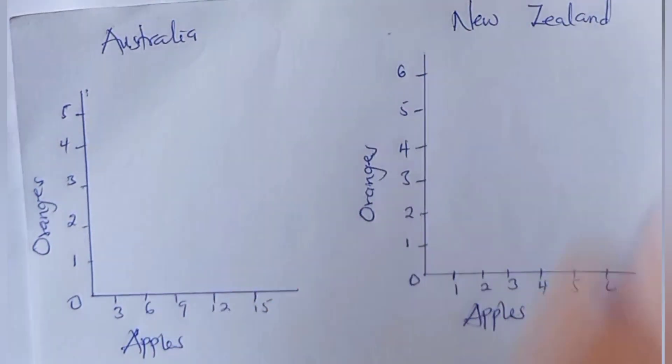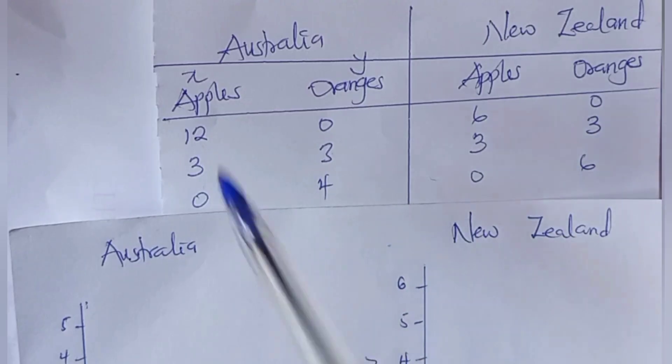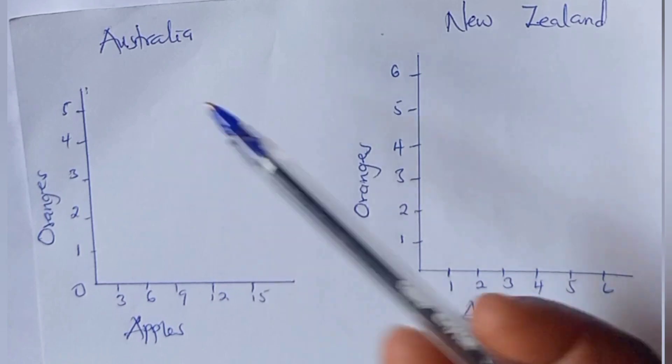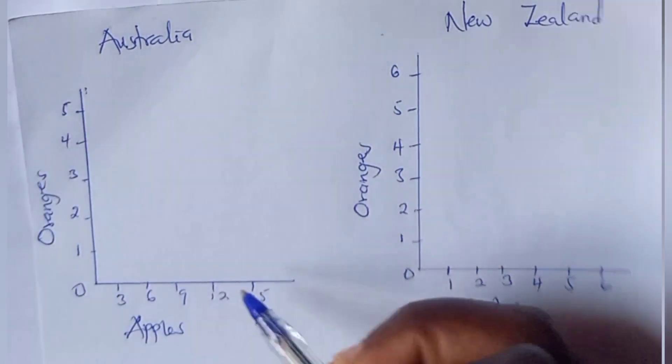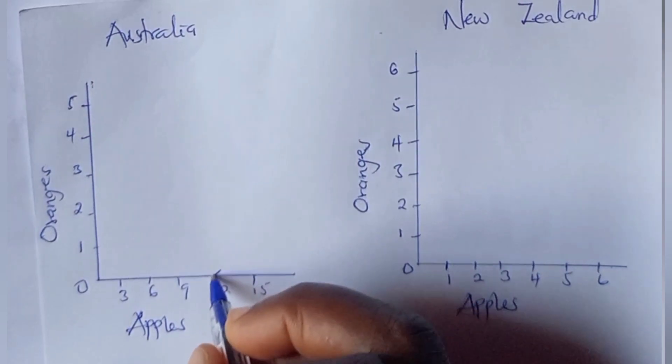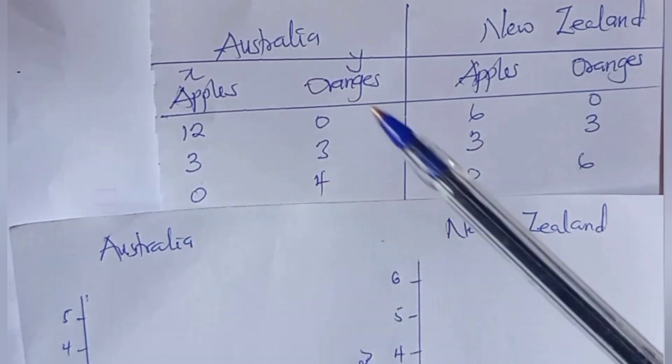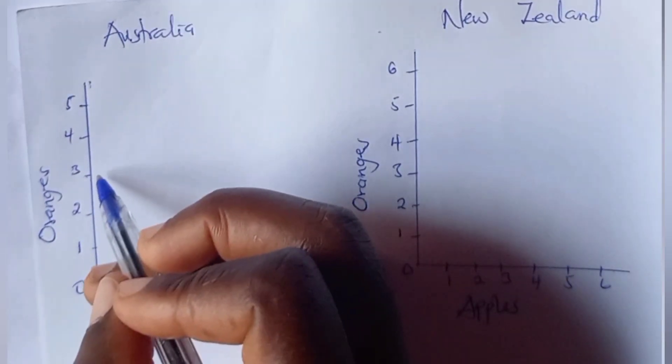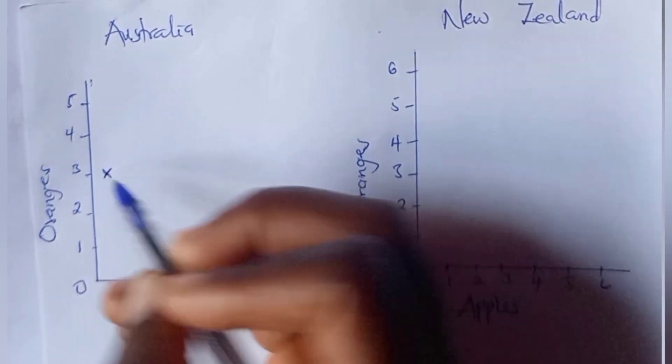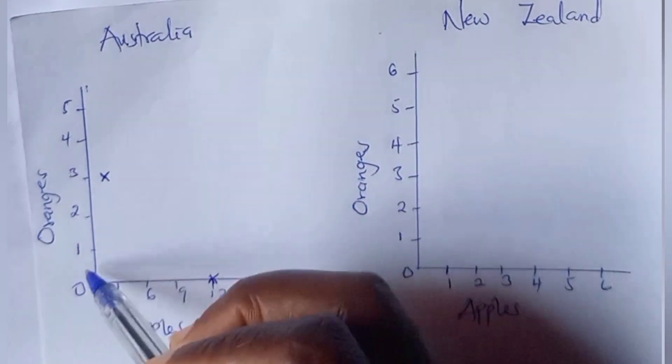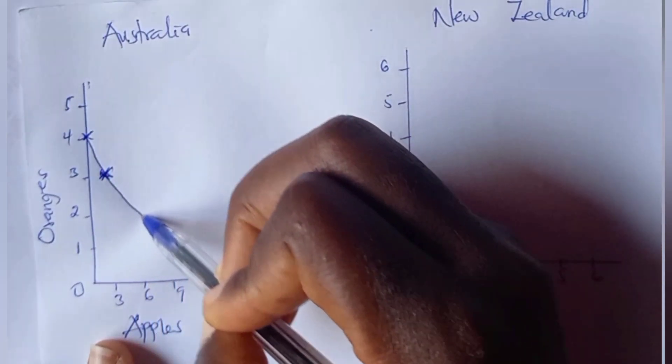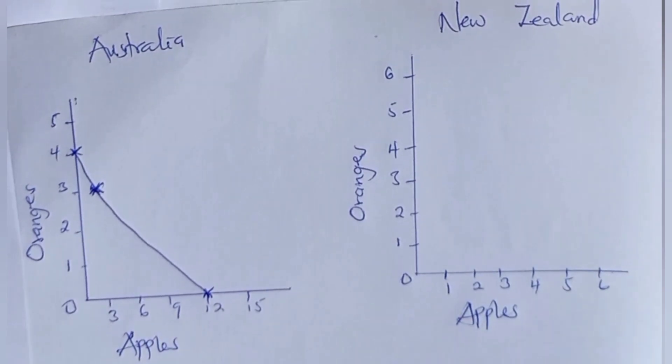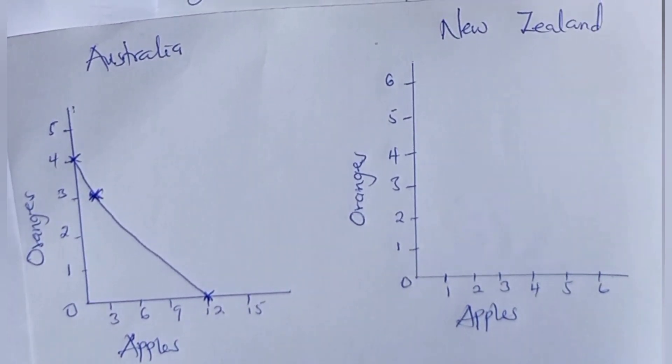Good. Since we are done with labeling our x and y axis, we go ahead with plotting our points. Australia produces 12 apples and zero oranges. How do you plot this on your graph? Locate where apples are on your graph - apples are here and oranges are here. So 12 apples, zero oranges - let's get it here. Now 3 apples, 3 oranges - 3 apples and 3 oranges, right. Then zero apples and 4 oranges. Let's plot it. Join.